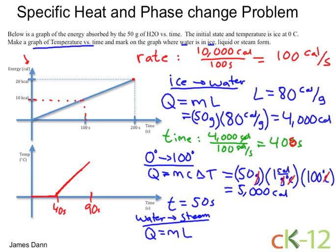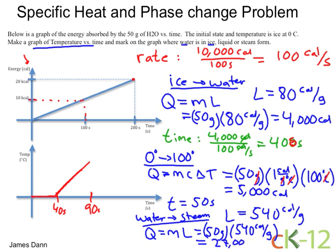L here stands for the heat of vaporization. And for water, for H2O I should say, the heat of vaporization is 540 calories per gram. So that's just 50 grams times 540 calories per gram. And 50 times 540 is 27,000 calories. And that corresponds to 270 seconds.